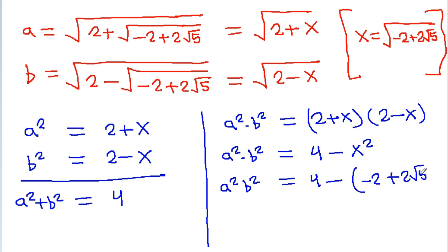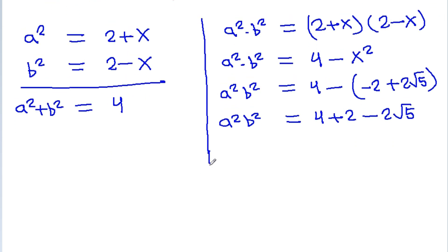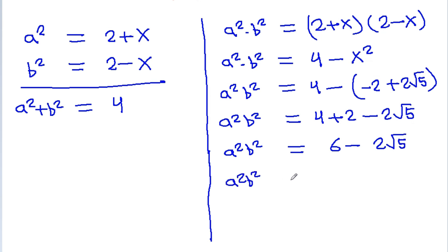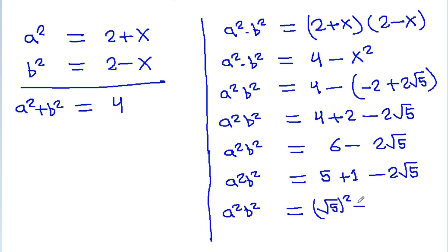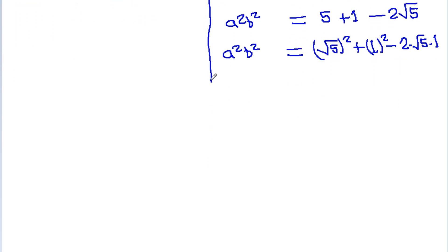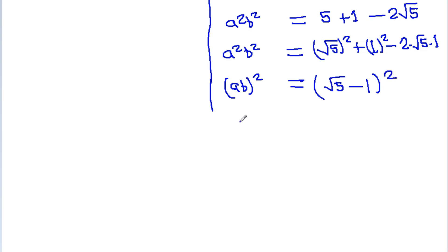Now x² = (-2 + 2√5), so a²b² = 4 - (-2 + 2√5) = 4 + 2 - 2√5 = 6 - 2√5. This can be written as 5 + 1 - 2√5 = (√5)² - 2·√5·1 + 1² = (√5 - 1)². Therefore ab = √5 - 1.